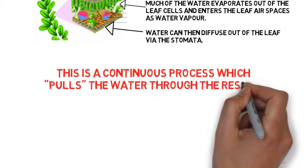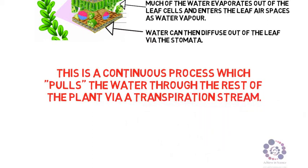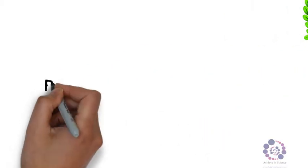This causes a continuous process which pulls the water through the rest of the plant via what we call the transpiration stream.